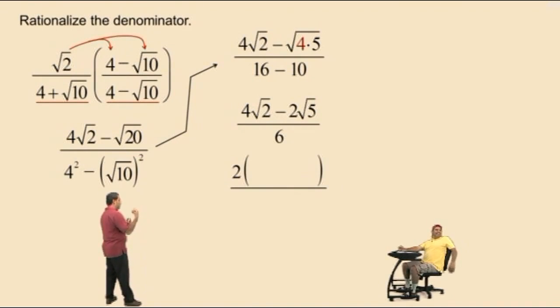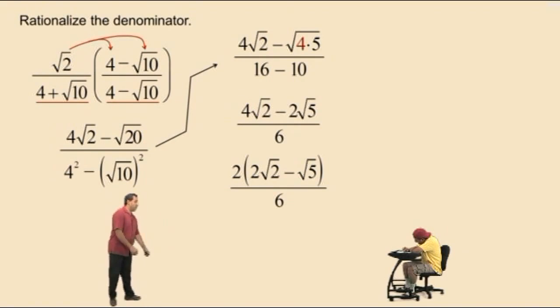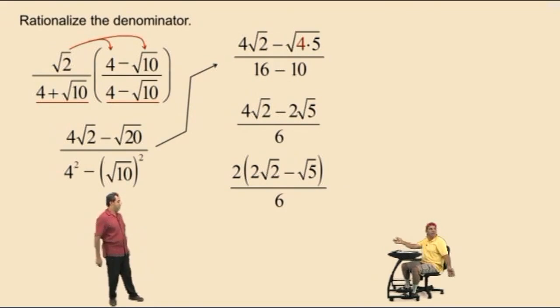And now, when you factor out the 2, you're left with 2 square roots of 2 subtract square root of 5. Let's bring down the 6. And now, we're still not done because we can reduce the 2 and the 6.